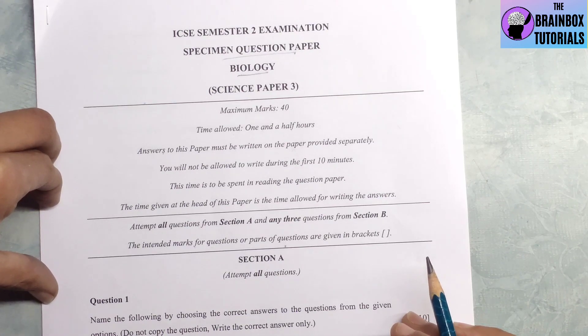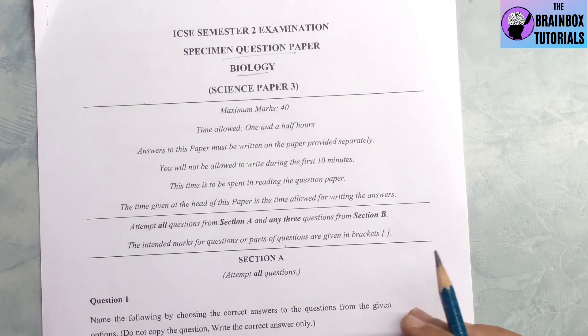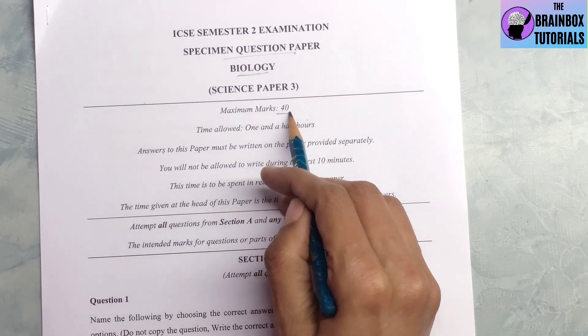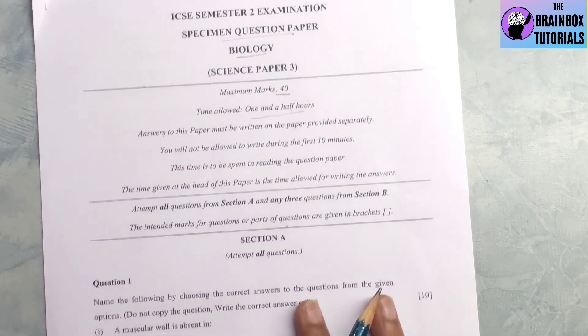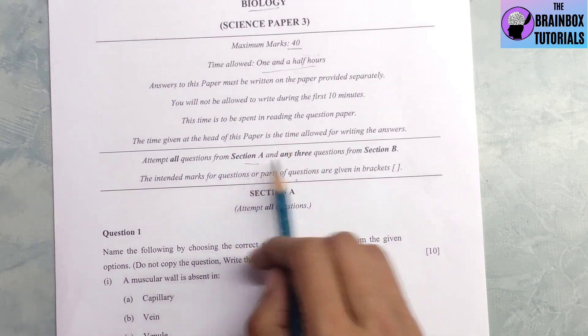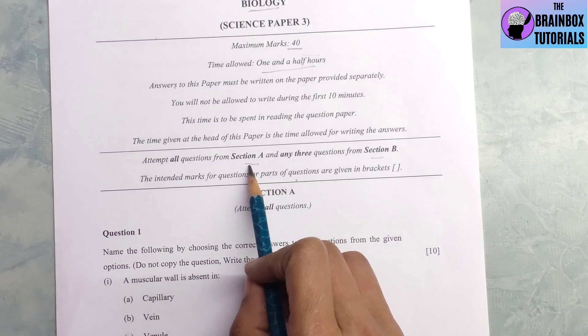First we will discuss the pattern of the paper and then we will solve the whole paper. So let us look at the pattern. Maximum marks will be 40 in semester 2 and time allowed is one and a half hours. There are 2 sections, section A and section B.